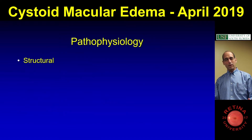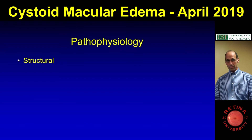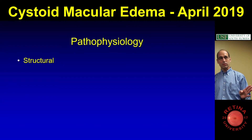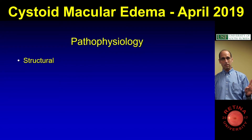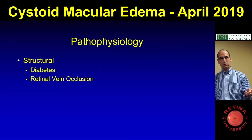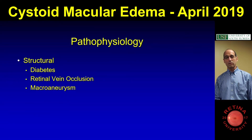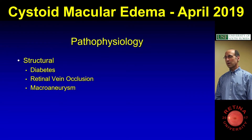So macular edema — I think of it in four different categories. The first one's structural, where the retinal vessels are just structurally abnormal and you get retinal swelling. Diabetes, diabetes coats, retinal vein occlusion, and some macroaneurysms — those are all diseases where the retinal vessels are just abnormal and they leak.